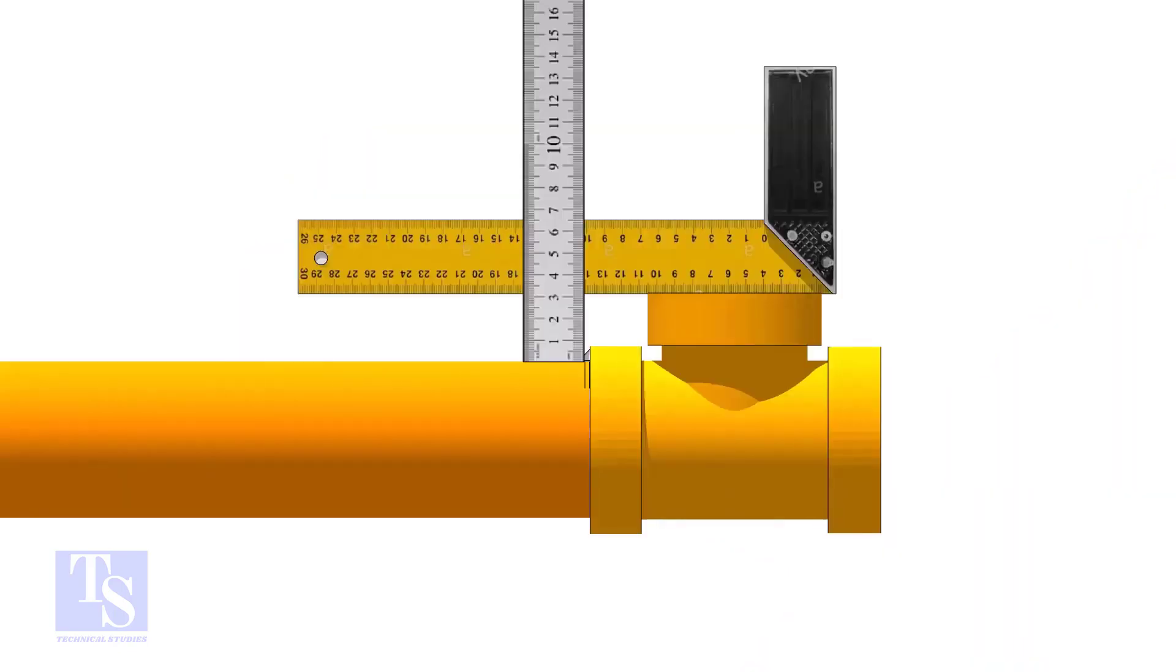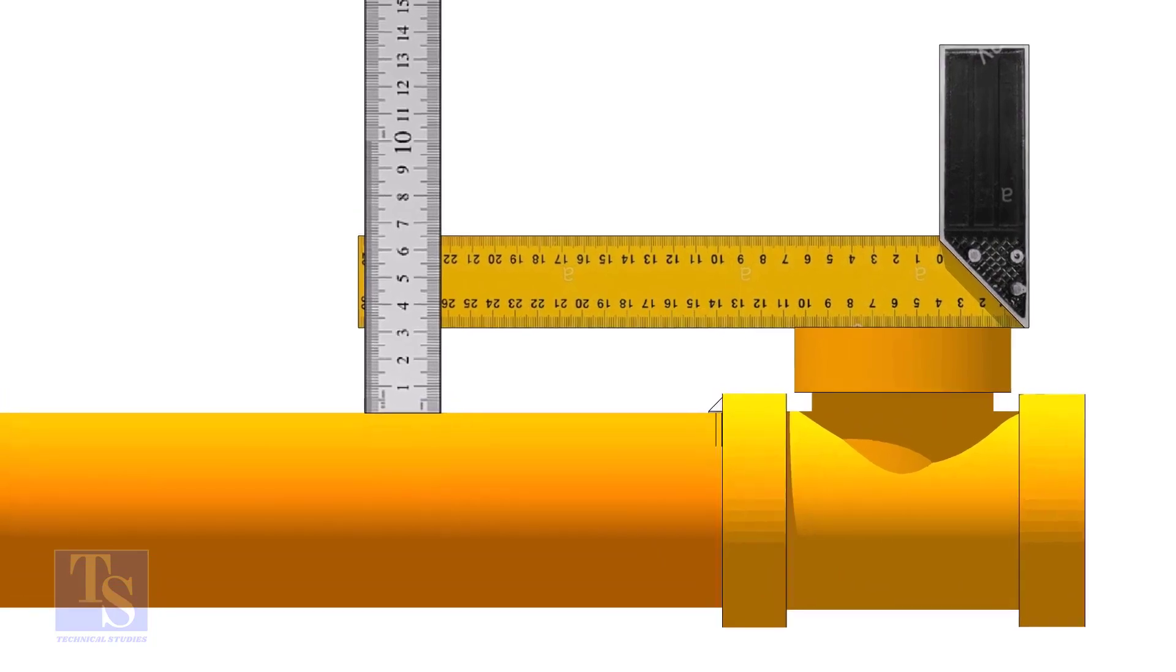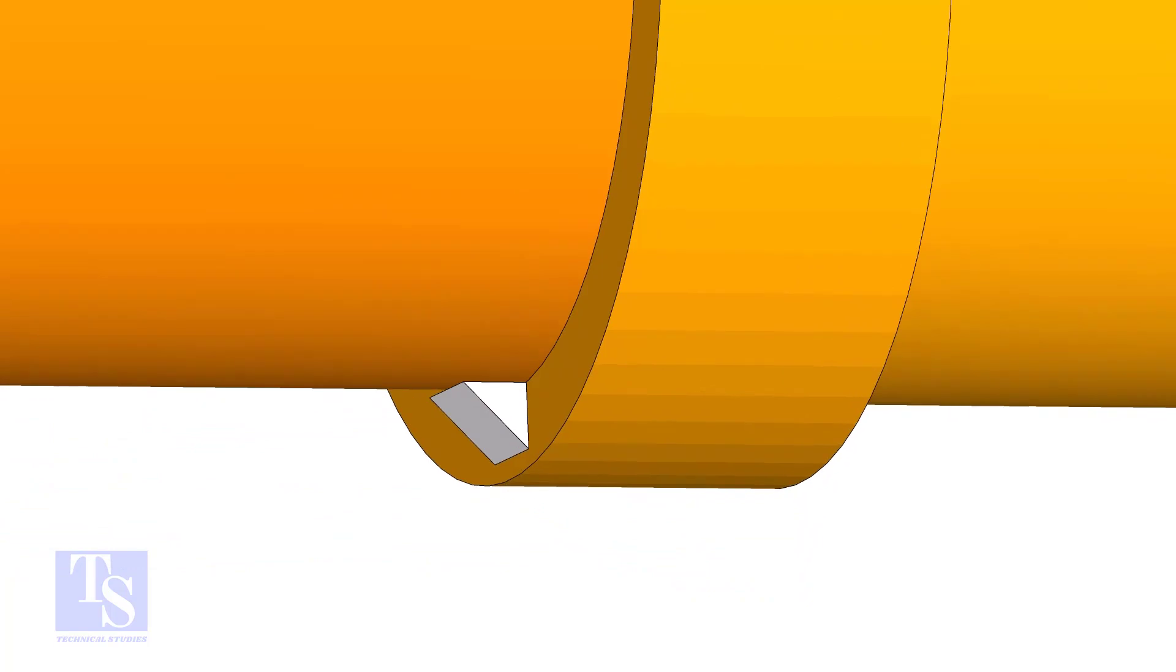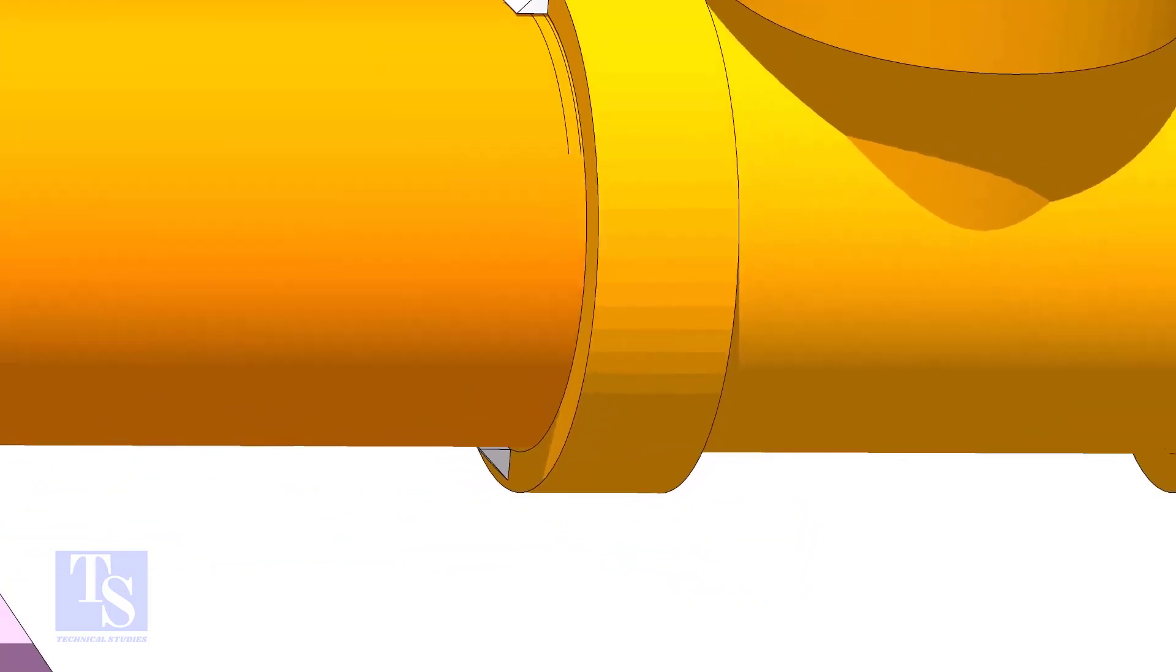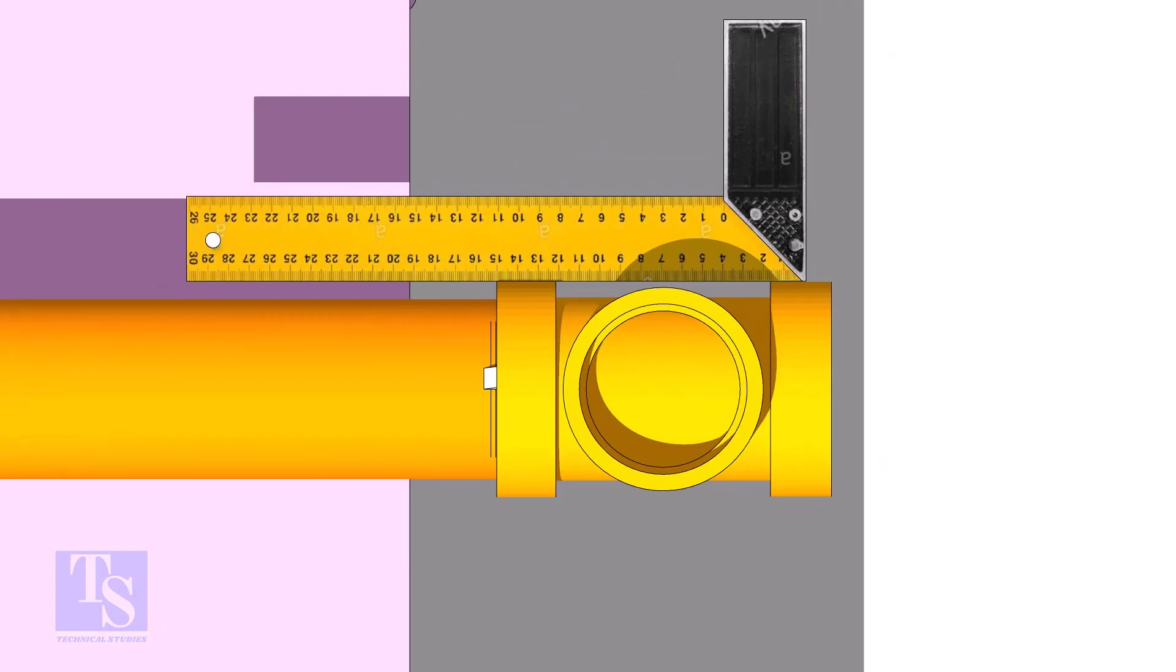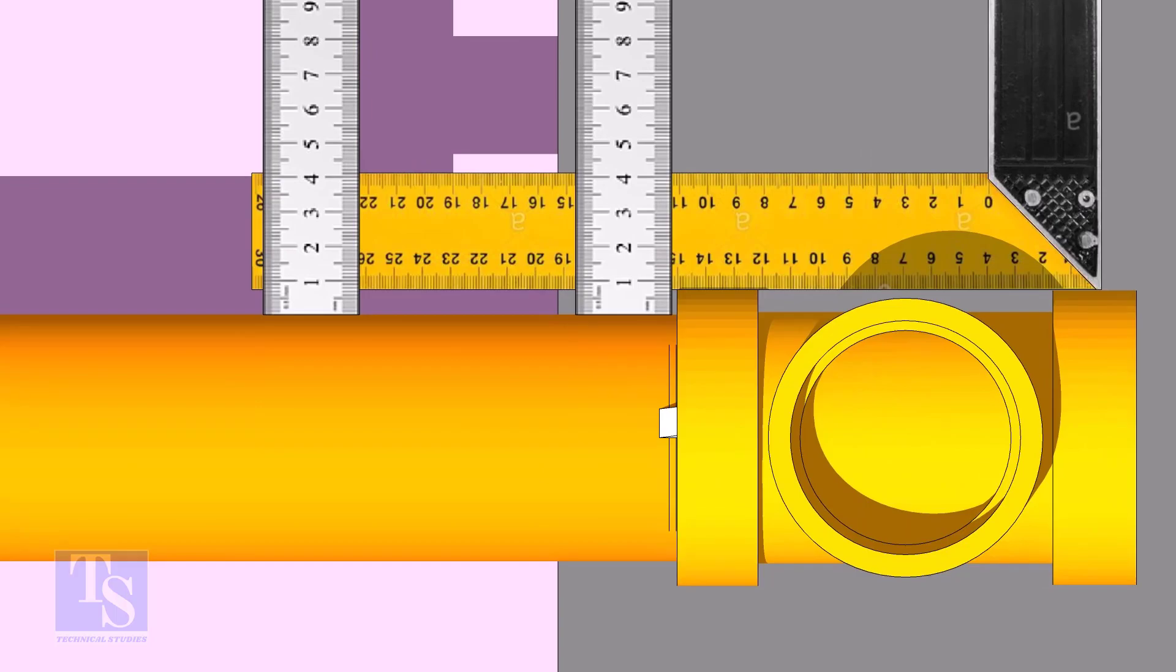Correct the level of the T and tack weld at the bottom side. Now, correct the side of the T. Tack weld on both sides.